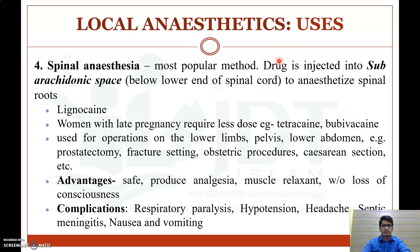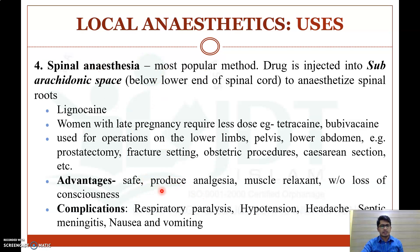Spinal anesthesia is the most popular method, in which the drug is injected into the subarachnoid space — between the lower end of the spinal cord — to anesthetize spinal roots. Commonly used drugs include lignocaine, tetracaine, and bupivacaine, especially in late pregnancy. It is used for operations on lower limbs, pelvis, lower abdomen, prostatectomy, fracture setting, obstetric procedures, and caesarean section. Advantages: safer, produces analgesia and muscle relaxation without loss of consciousness. Complications include respiratory paralysis, hypotension, headache, septic meningitis, nausea, and vomiting.